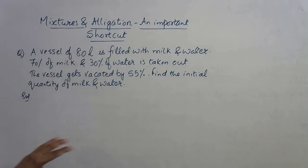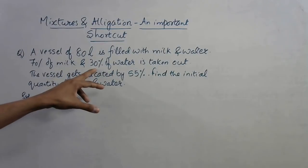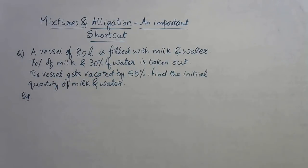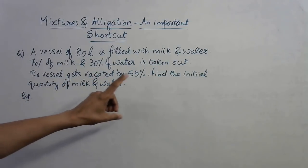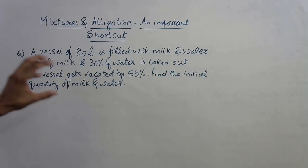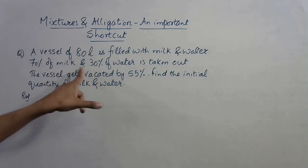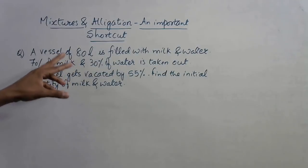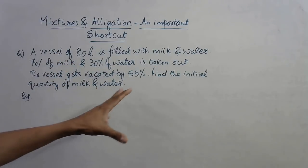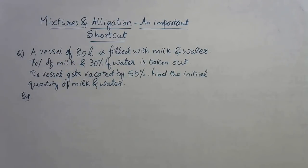Now what we are doing is we are taking out 70% of the total milk and 30% of the total water. In doing so, the vessel gets vacated by 55%. So by taking out 70% of milk and 30% of water, the overall difference in volume is 55%.